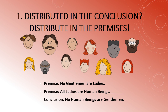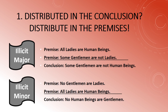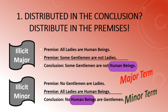Consider another argument: 'No gentlemen are ladies, and all ladies are human beings — does it follow that no human beings are gentlemen?' That sounds completely false. Again, 'human beings' is distributed in the conclusion, but it was not distributed in premise two. Whenever you distribute a term in the conclusion but didn't distribute it in the premises, you're doing something illicit. If it's the major term that fails, it's the fallacy of illicit major; if it's the minor term, it's the fallacy of illicit minor.